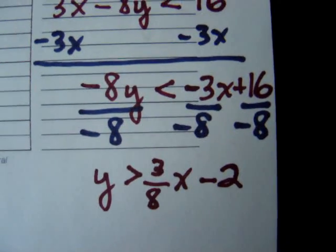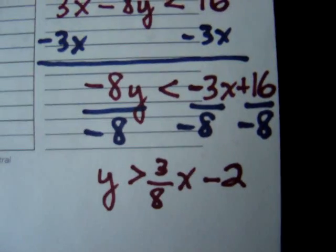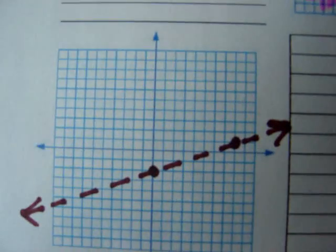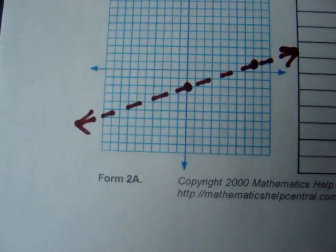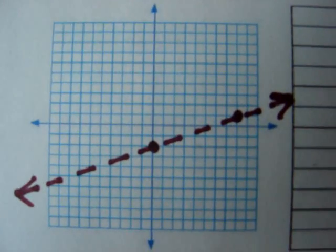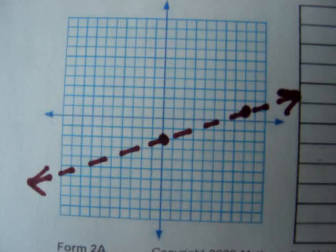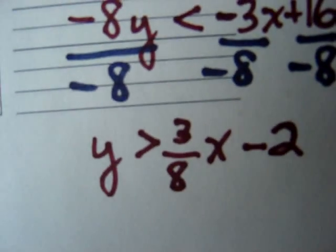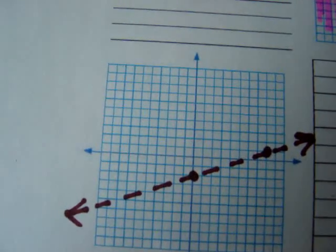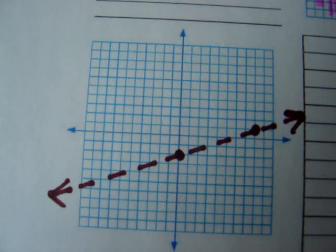What does this mean to us? Well, the y-intercept is negative 2, and the slope is 3 over 8. Taking a look at the graph, there is our intercept at negative 2. And then I apply the slope of up 3 over 8. Notice, the line is broken and not solid because there was no equal to part, just greater than. And now,